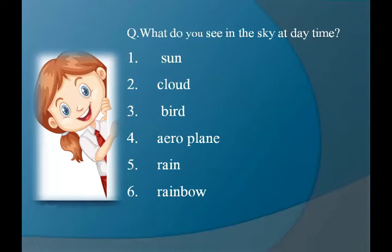The second thing is cloud. Let's learn the spelling of cloud: C-L-O-U-D, cloud. We see cloud in the sky at daytime and it looks like a cotton ball.